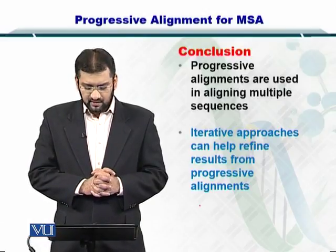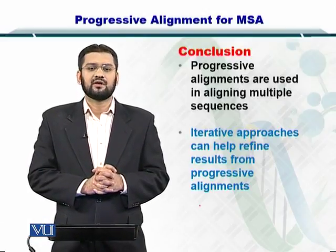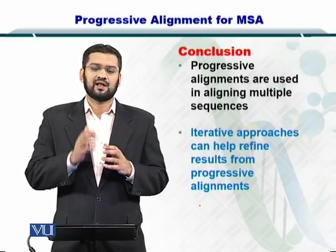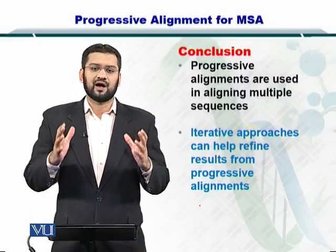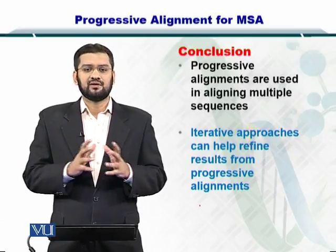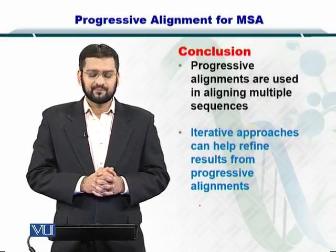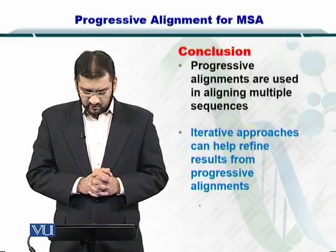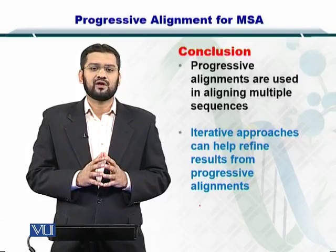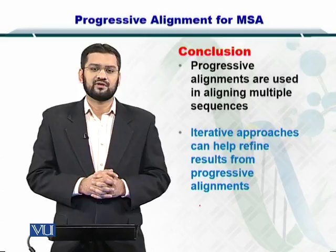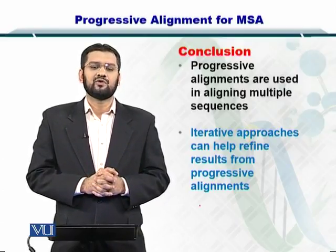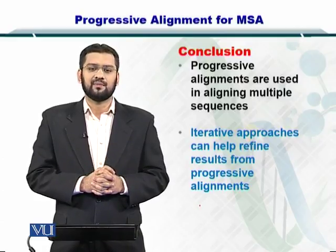In conclusion, progressive alignment can help you perform multiple sequence alignment. In progressive alignment, you repeatedly align sequences to arrive at a guide tree using the similarity between sequences, and then create the relationship between the sequences. These approaches can help you refine the results, especially if improvement is needed — you can iterate this process by using different pairs to start the progressive alignment in the MSA.